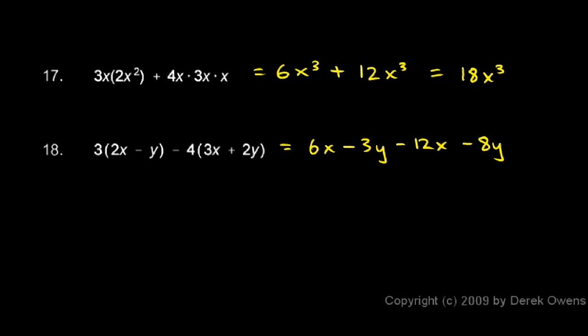We're not quite done yet though, we need to take our 6x and the negative 12x and combine those. 6x and negative 12x combines to give us a negative 6x, so that's, those two terms are now taken care of. Now we need to combine the negative 3y and the negative 8y, and those combine to give us a negative 11y, and that's the answer, negative 6x minus 11y.